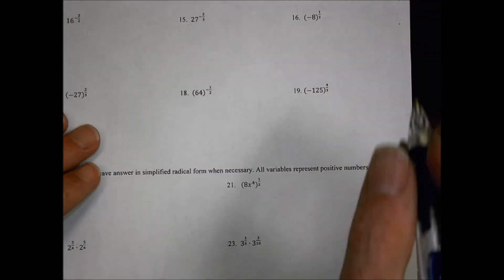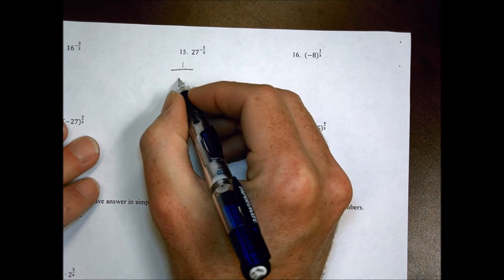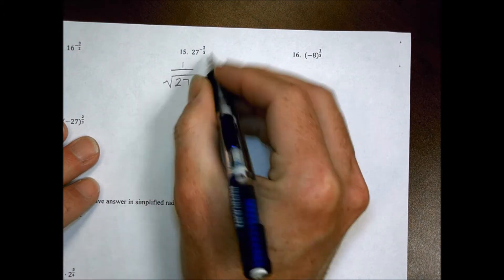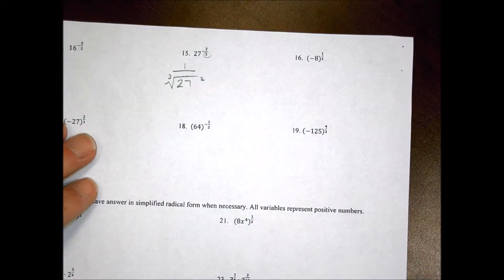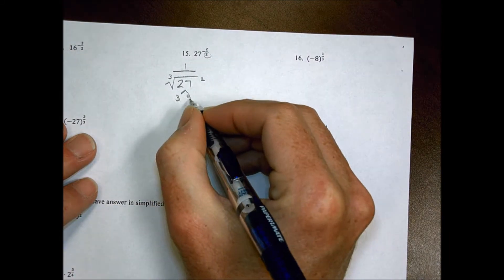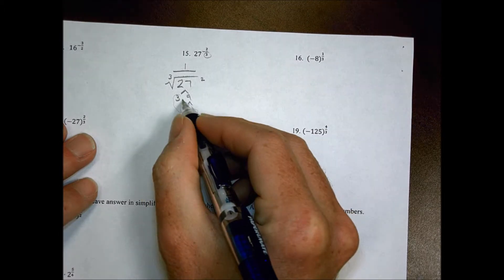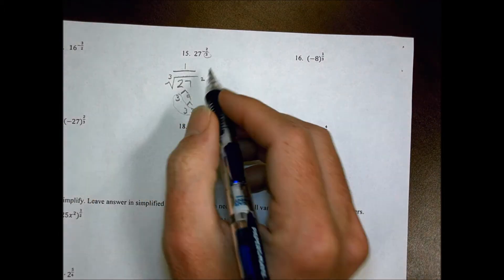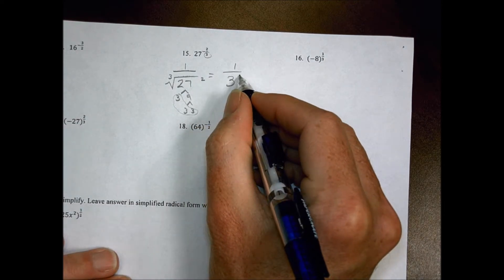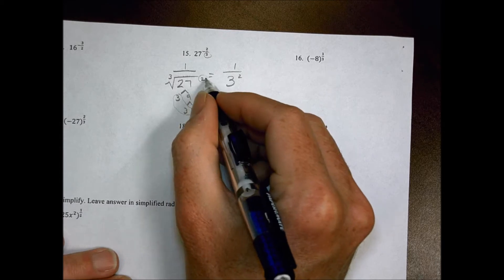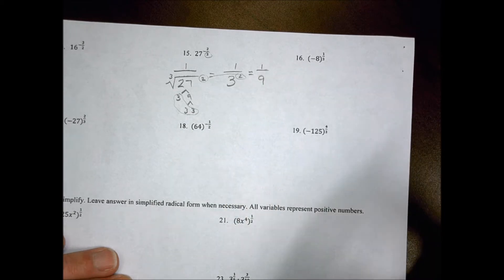For number 15, it's 27 to the negative 2 thirds. That becomes 1 over the cube root of 27, squared. Breaking down 27: 3 times 9, which is 3 times 3. I have a cluster of three 3s, so the cube root of 27 is 3. That gives 1 over 3, squared, and 3 squared is 9, so the answer is 1 ninth.